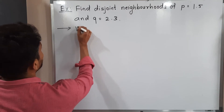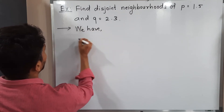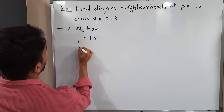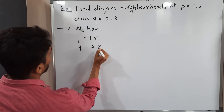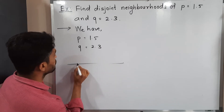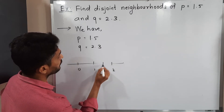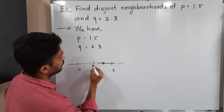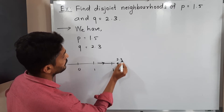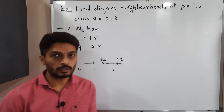The given points are P = 1.5 and Q = 2.3. If you draw a number line: 0, 1, 2 — 1.5 is exactly in the middle of 1 and 2, and Q = 2.3 is placed here. We have to find their disjoint neighborhoods.